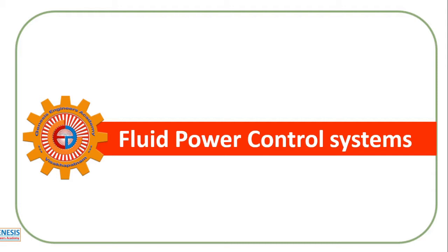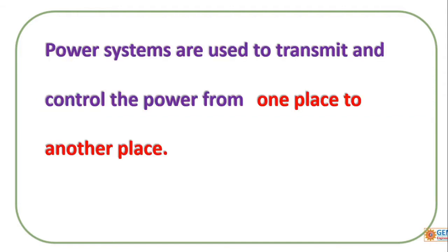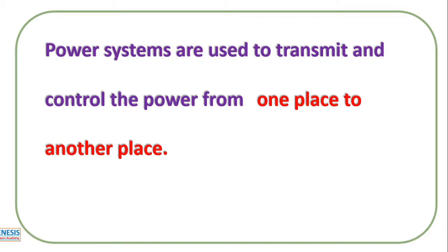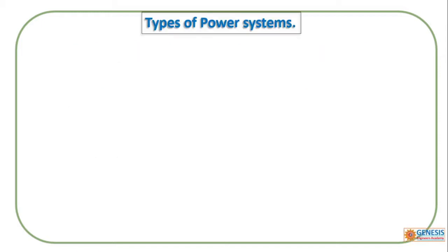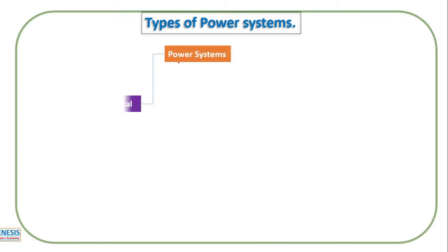So what is a power system? Power systems are used to transmit and control power from one place to another. These systems are used to transmit mechanical power, electrical power, hydraulic power, and pneumatic power. The power system can be classified as mechanical, electrical, and fluid power systems.